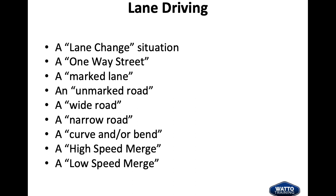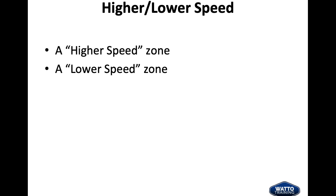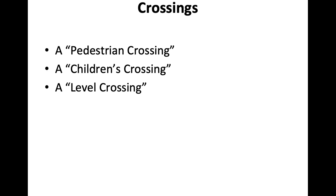When putting your circuit together, try to get 80% of the following: lane driving, a lane change, a one-way street, a marked lane, an unmarked lane, a wide road, a narrow road, a curve or bend, a high-speed merge, a low-speed merge, roundabout, combination turn, staggered intersection, uncontrolled intersection, controlled intersection with stop sign or stop line, controlled with a give way, directional markers painted on the road or on signage, multi-lane roads, edge lines, crossroads, and T-sections. Also try to find a high-speed zone — minimum of 80 — a low-speed zone, higher traffic density, and lower traffic density situations.